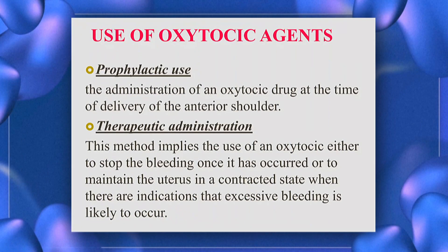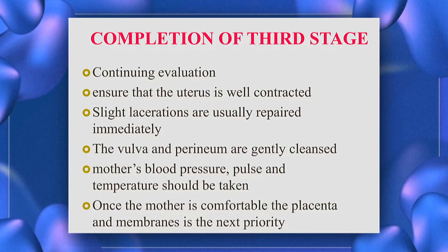Next is the prophylactic use of oxytocin: administration of an oxytocin drug at the time of delivery of the anterior shoulder. In therapeutic administration, oxytocin is used either to stop bleeding once it has occurred or to maintain the uterus in a contracted state when there are indications that excessive bleeding is likely to occur.